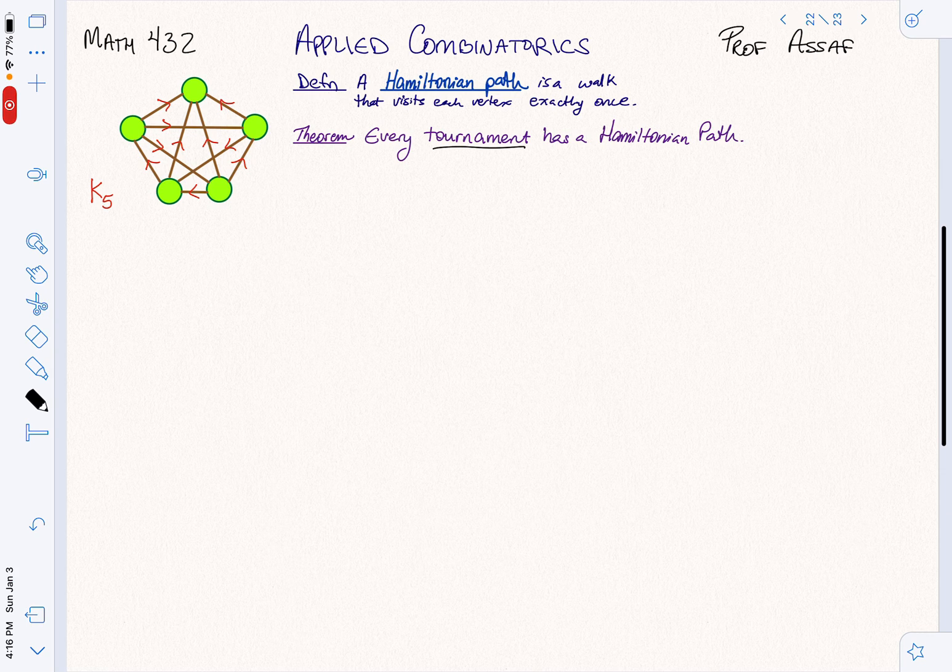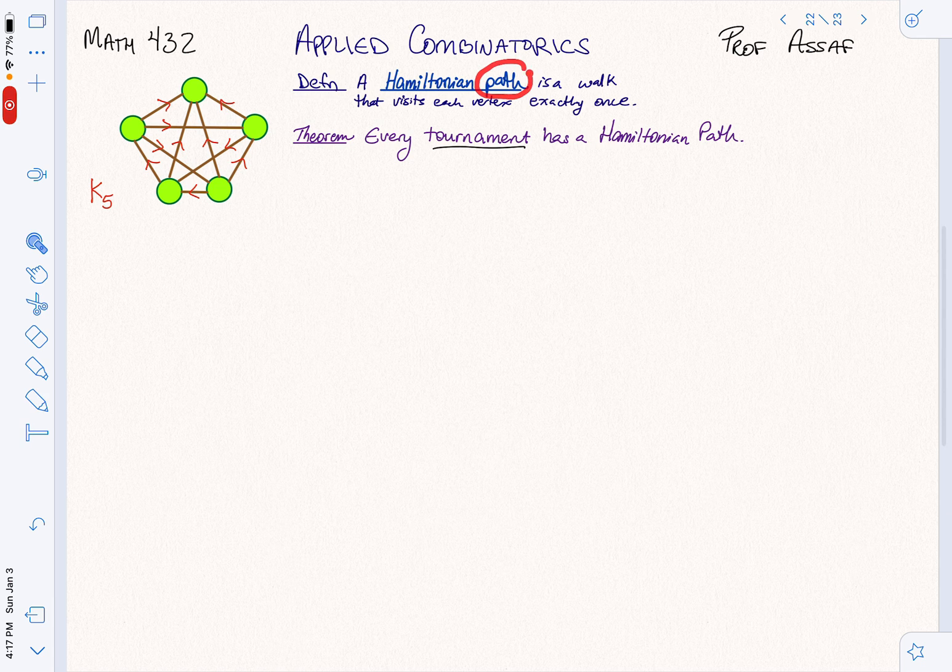Let's look now at the idea of a Hamiltonian cycle on a directed graph. We have to follow the flow of the edges. Instead of looking at a Hamiltonian cycle, I want to look at a Hamiltonian path. This is a walk, not necessarily closed, that visits each vertex exactly once.